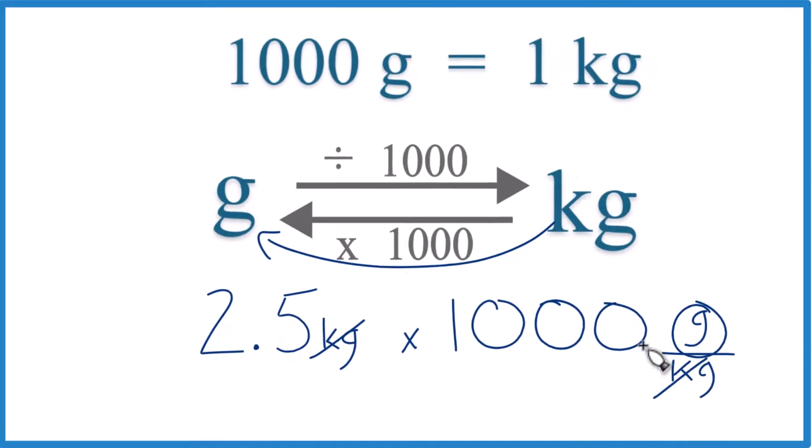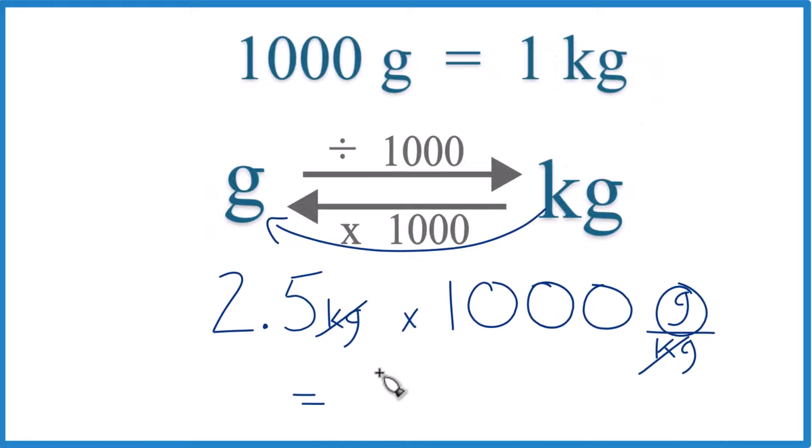2.5 times 1,000 grams equals 2,500 grams. So in answer to our question, when we convert 2.5 kilograms to grams, we end up with 2,500 grams.